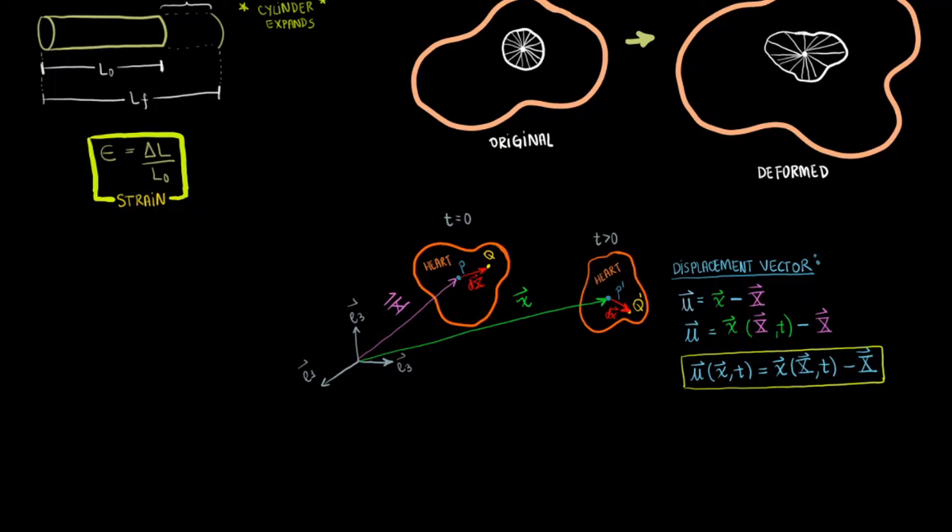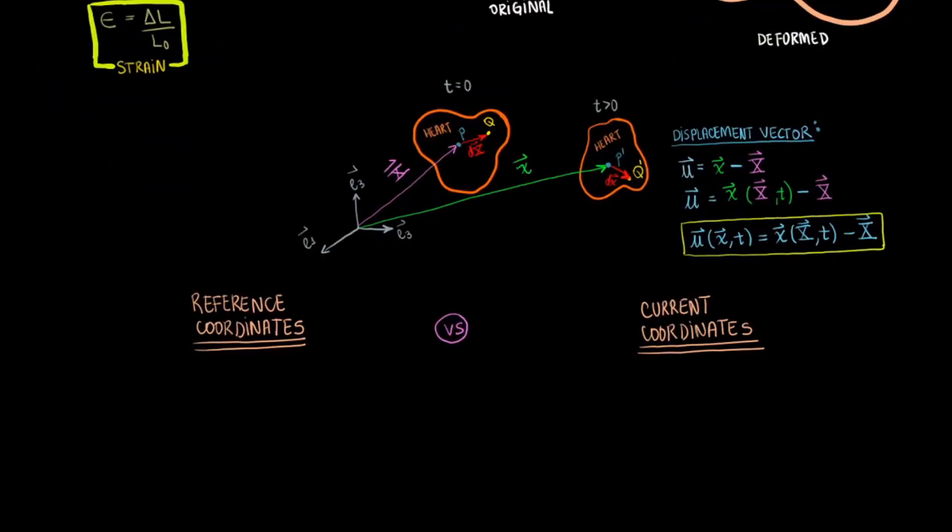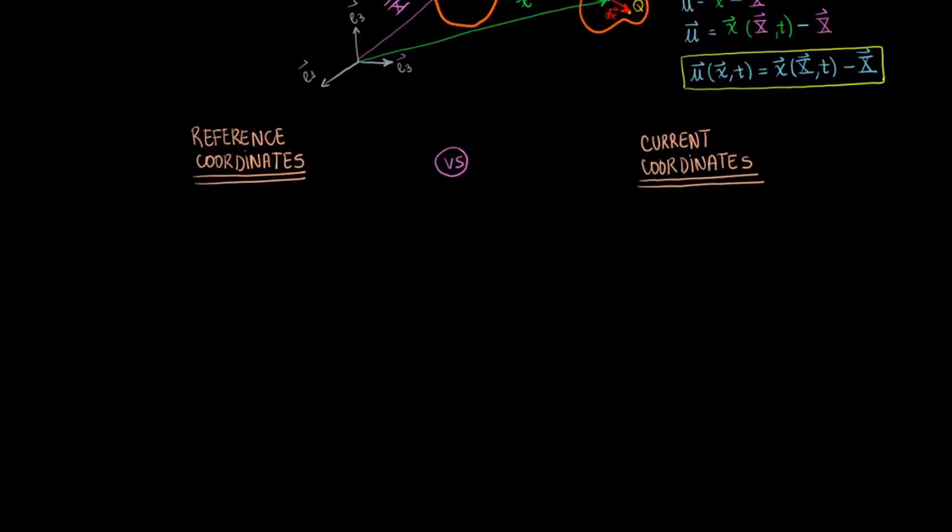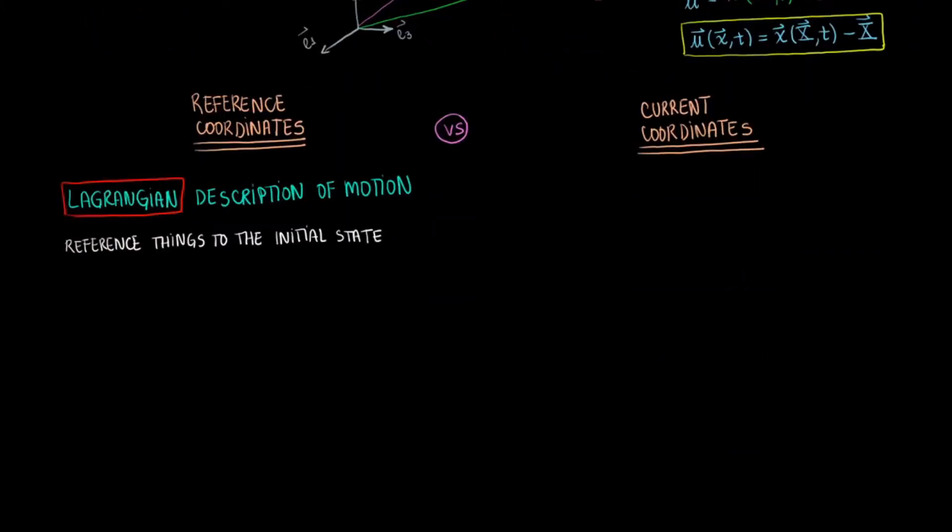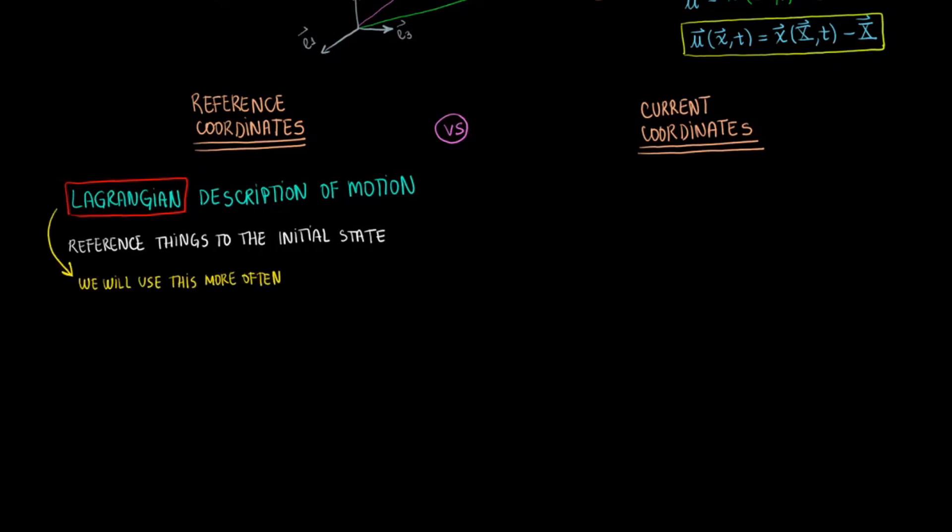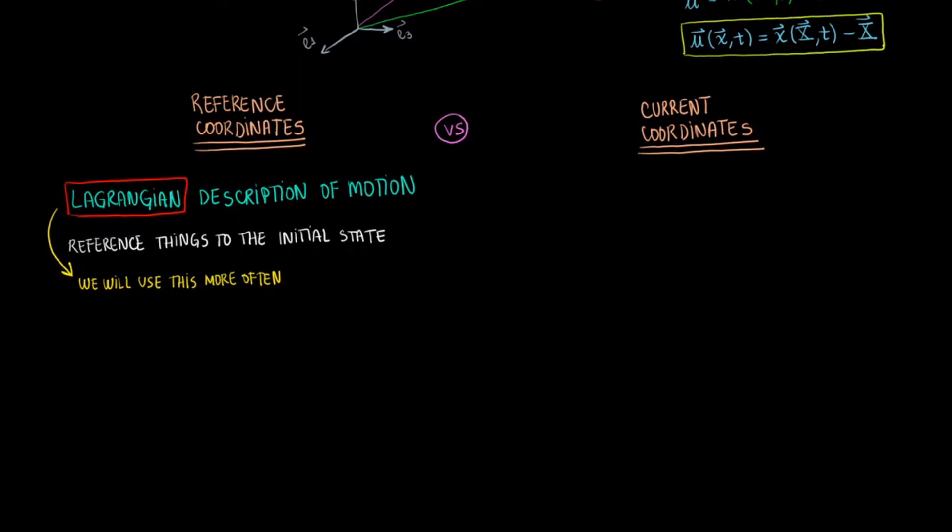As I had briefly mentioned, there are two coordinates playing here, the reference and the current coordinates. When we reference what is going on to an initial stage, we are using a Lagrangian or material description of the motion. We will be working with the Lagrangian description for the most part. On the other hand, when we reference what we see to the current state, we use an Eulerian or spatial description of motion. An example of an Eulerian tensor is actually the Cauchy stress tensor.